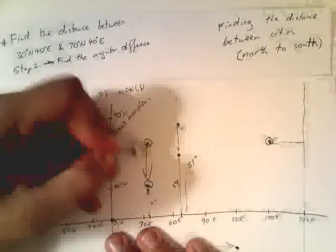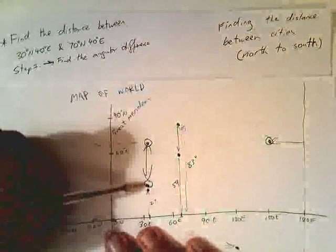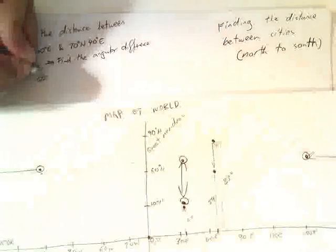Okay, so we need to find that distance there. Now if it's 70 up to there and it's 30 up to there, we can find the angular difference, and I'm going to do that.